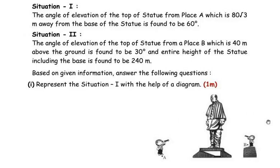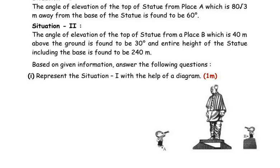Situation 2: The angle of elevation of the top of the statue from place B, which is 40 meters above the ground, is found to be 30 degrees, and the entire height of the statue including the base is found to be 240 meters. Based on this given information, the first question asks us to represent situation 1 with the help of a diagram.